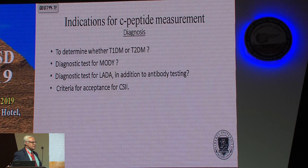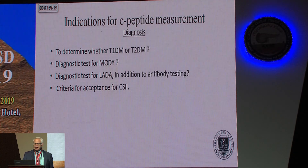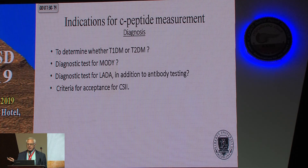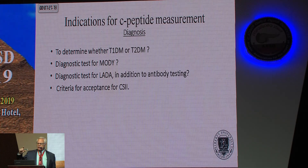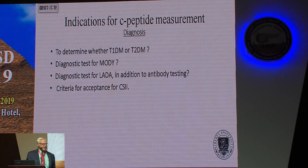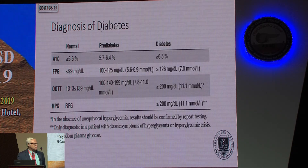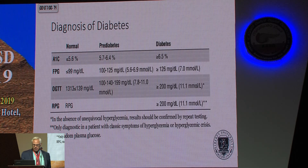Diagnosis: can you use C-peptide to diagnose diabetes? The diagnosis of diabetes is based on glucose or A1C, so there's really no value in getting a C-peptide to diagnose diabetes. But what about distinguishing type 1 from type 2? Can you use it to diagnose MODY, or latent autoimmune diabetes? In the United States, we actually require C-peptide levels to get a continuous subcutaneous insulin infusion pump device — you have to have a low C-peptide level, though that's not based on any science or study; it's just what the government requires.